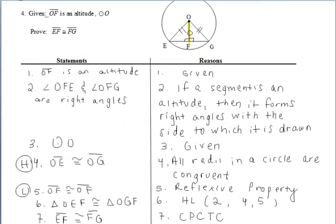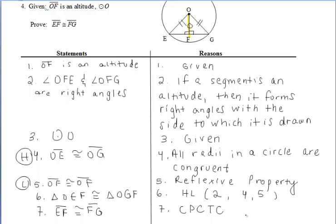Example 4 — here is the answer key, so be sure to double-check your answers with mine. Please make sure you included the right angles as a result of the altitude. Then we have the radii of the circle, which gives us the congruent hypotenuses. Then we can use the reflexive property for the legs, and we just had to use CPCTC for this one.